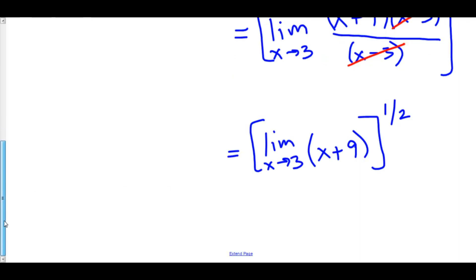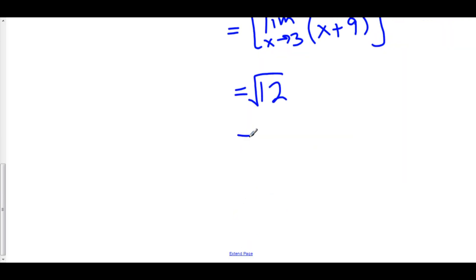Well, now we can just plug in 3. 3 plus 9 is 12. So this is just the square root of 12 since one half is the square root. And of course we can reduce this by taking out a 4. This is 2 root 3.